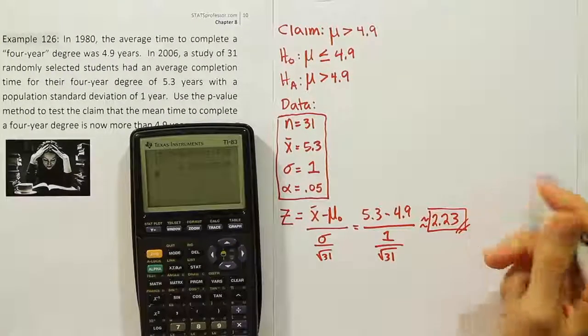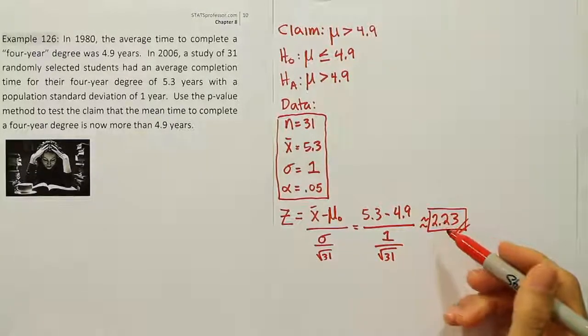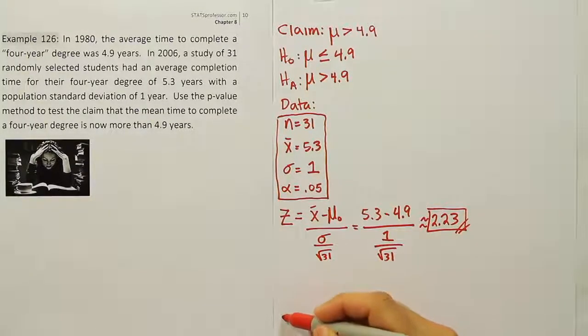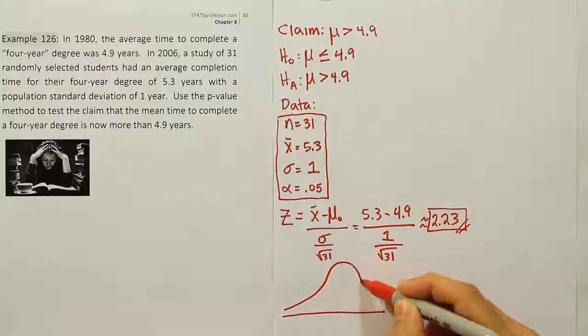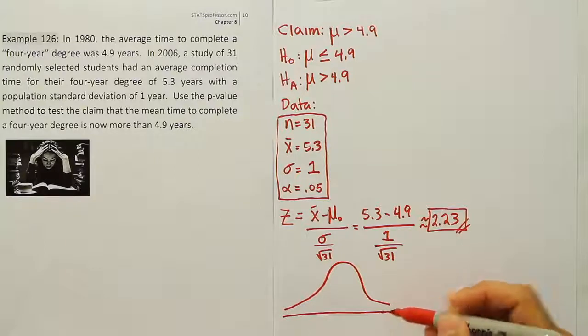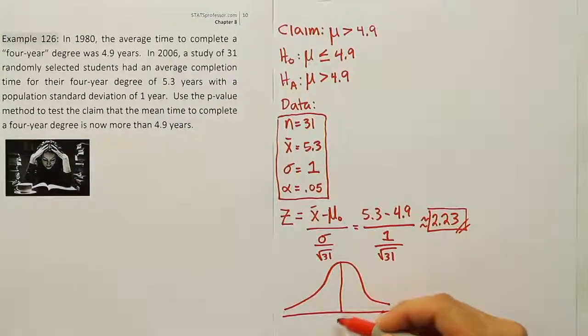Now once you have that z-score, the next step is to take that and plot it on the curve to see where it is with respect to zero. I'll draw the bell curve, and we're going to place that test stat on the curve. Remember the center is at zero, and so 2.23 is to the right of it.